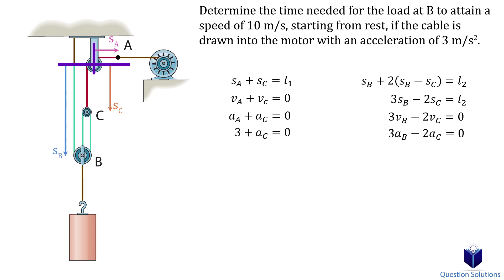Now we can plug in AA is equal to 3 meters per second squared. Solving gives us AB is equal to negative 2 meters per second squared. In other words, pulley B has an acceleration of 2 meters per second squared upwards.